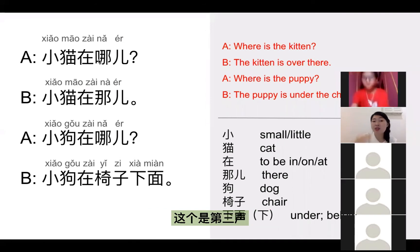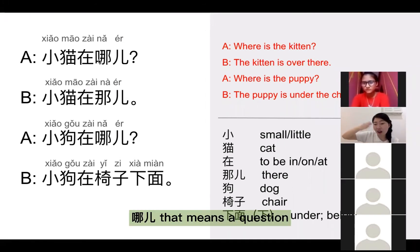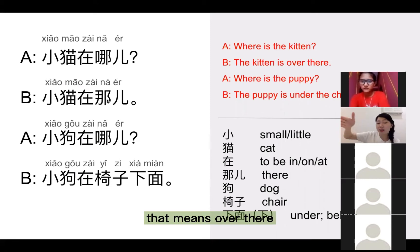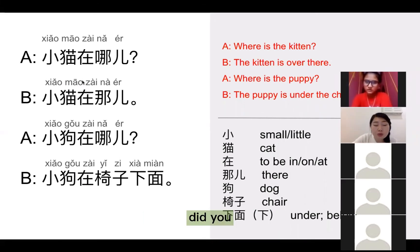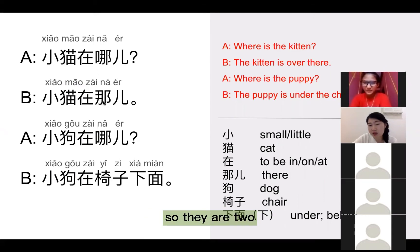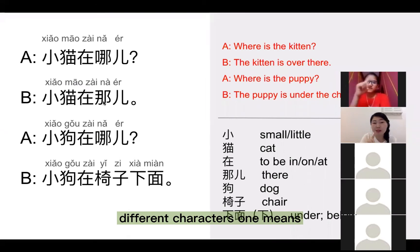那这里要注意两个地方。这个是第三声哪儿,那means a question — where is that? 哪儿? And this one is 那儿 — that means over there. Did you notice: 哪儿 has a 口字旁, but 那儿 does not. So they are two different characters.